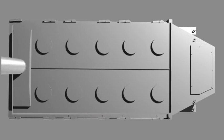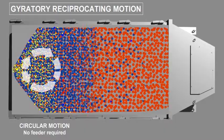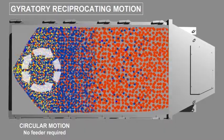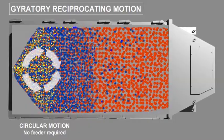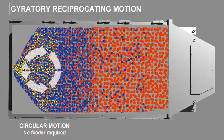This gyratory reciprocating motion, as it is called, has three distinct actions. The first, where the incoming feed enters the machine, is a gyratory motion. The motion quickly spreads the particles across the full width of the screener and starts stratifying the flow and conveying it down the screen surface.